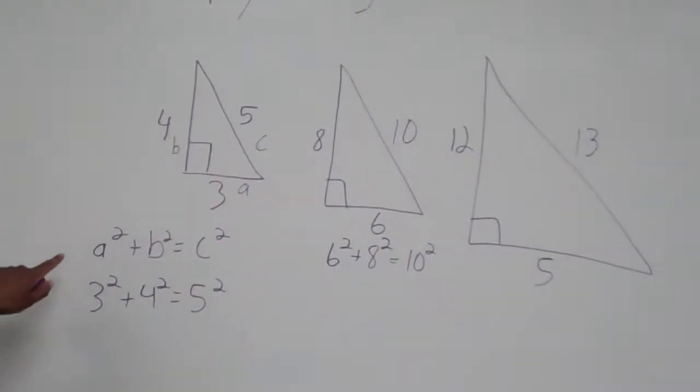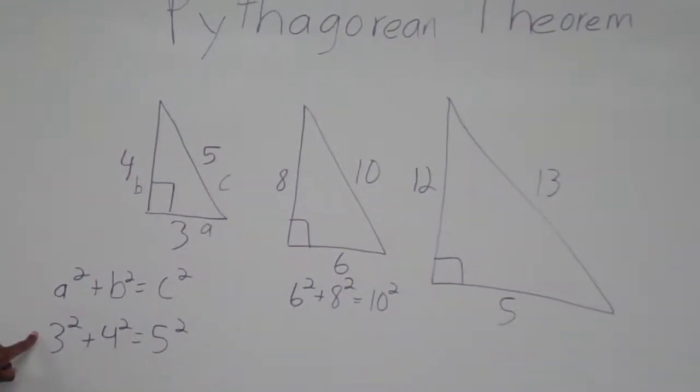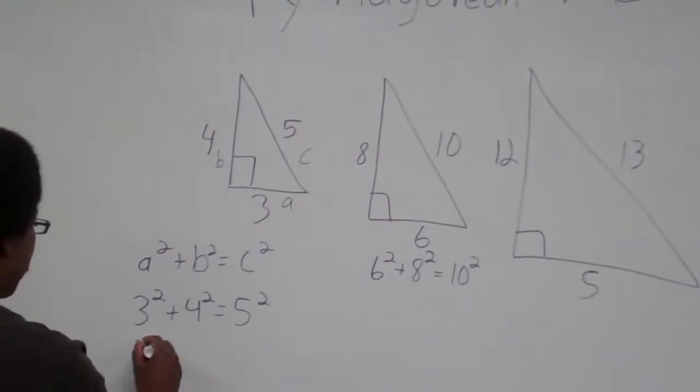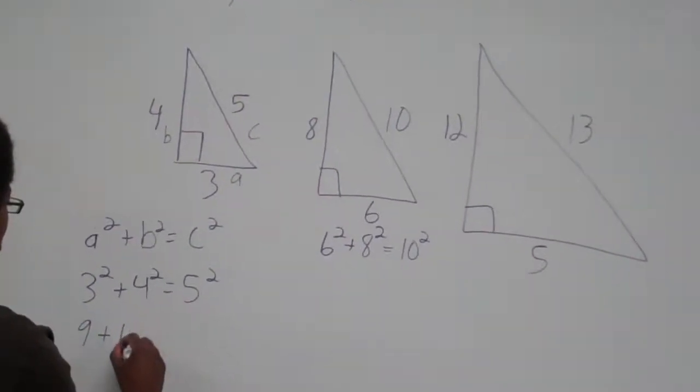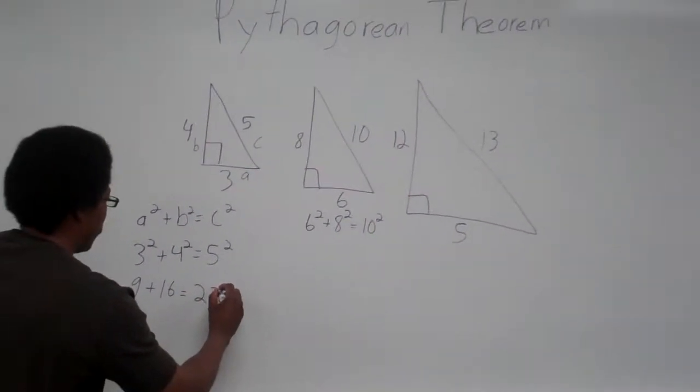So, for this triangle, A squared plus B squared equals C squared. So, here you have 3 squared plus 4 squared equals 5 squared. 3 squared is 9, plus 4 squared is 16, equals 5 squared, 25.